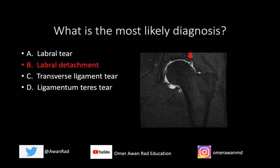The answer is this is a case of labral detachment. This dark triangular structure here is the labrum — this is the superior aspect of the labrum. The labrum is a fibrocartilaginous structure, so it's going to be dark on all MRI sequences. If there were a labral tear, we'd expect contrast to go into the substance of the labrum. We don't see that here.